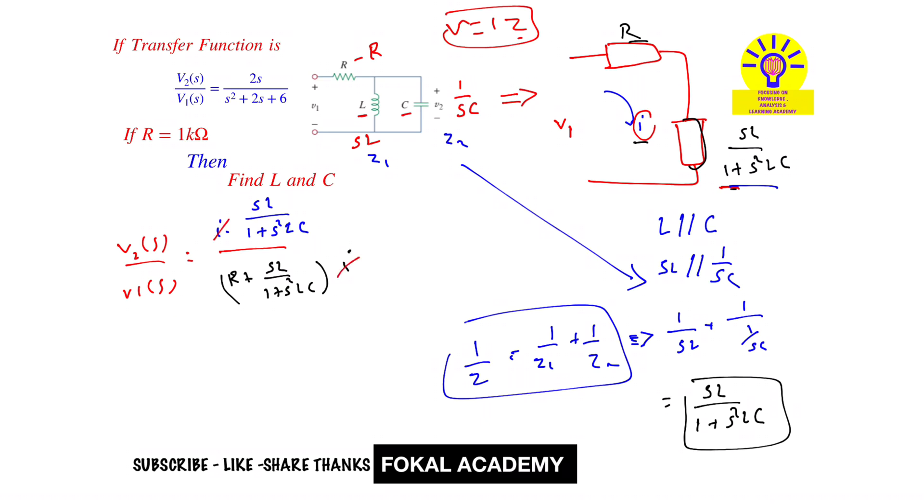It becomes sL/(1 + s²LC) upon, let's take the LCM in the denominator, that is R + R times s²LC + sL, upon 1 + s²LC. Here 1 + s²LC cancels. This is s²RLC + sL + R.